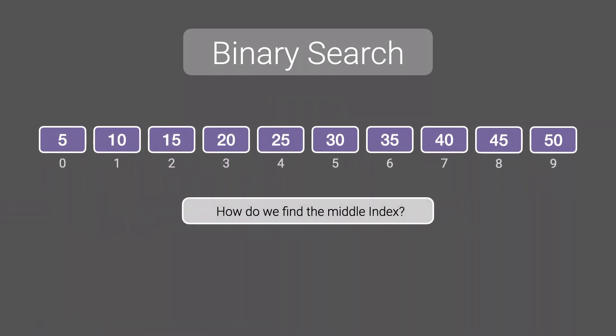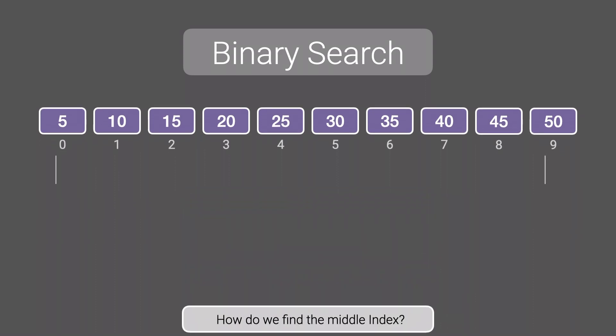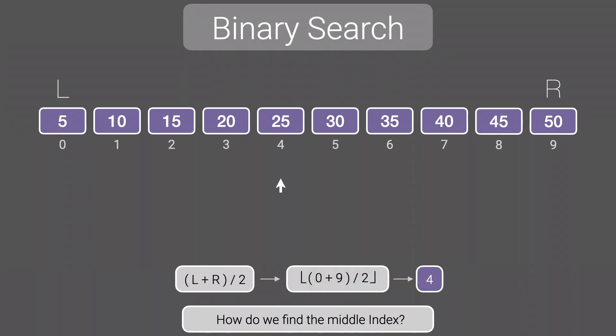How do we actually find this middle index? Since our initial search space is the entire array, we can use two variables, L and R, to represent the start and end point of our search area respectively. L represents the start index and R represents the end index. We then sum L and R and divide by 2 to get the middle index. Since L is 0 and R is 9, dividing by 2 gives us 4.5. Since 4.5 is not a valid index, we floor this value, giving us an index of 4.